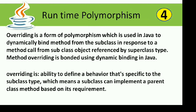Now, runtime polymorphism. Runtime polymorphism is achieved in Java by overriding. Overriding is a form of polymorphism used in Java to dynamically bind methods from the subclass in response to a method call from a subclass object reference by superclass type. Method overriding is bonded using dynamic binding in Java.